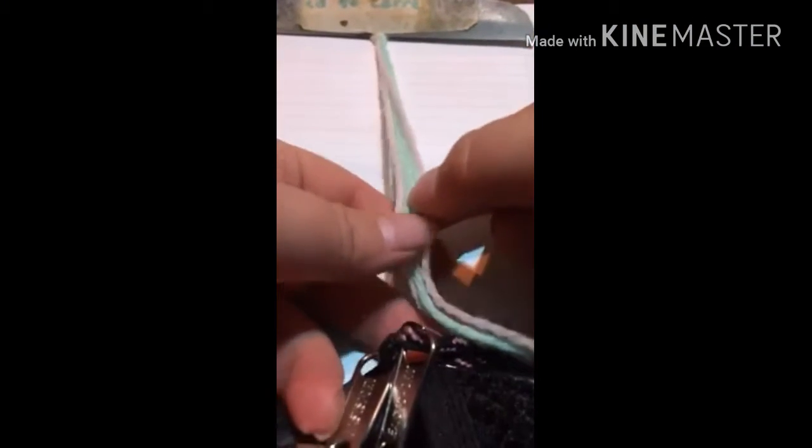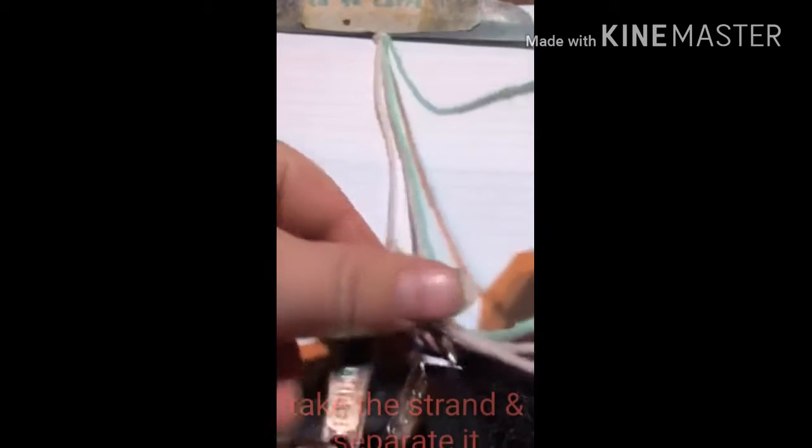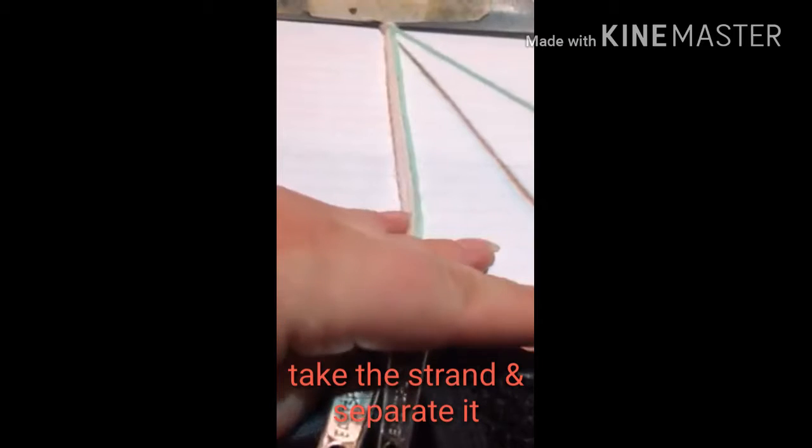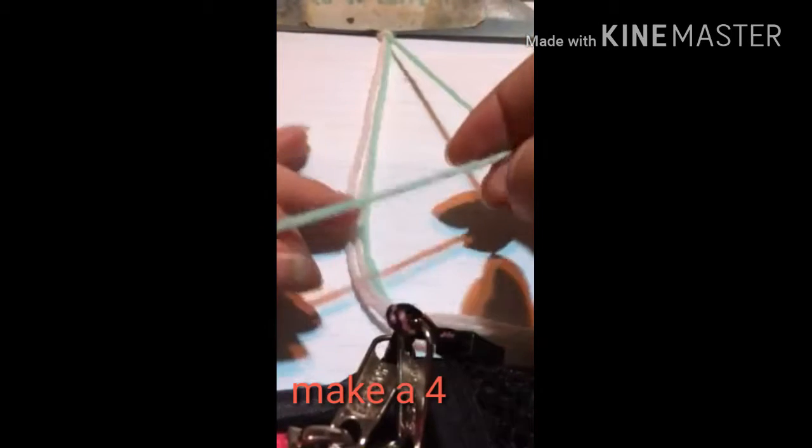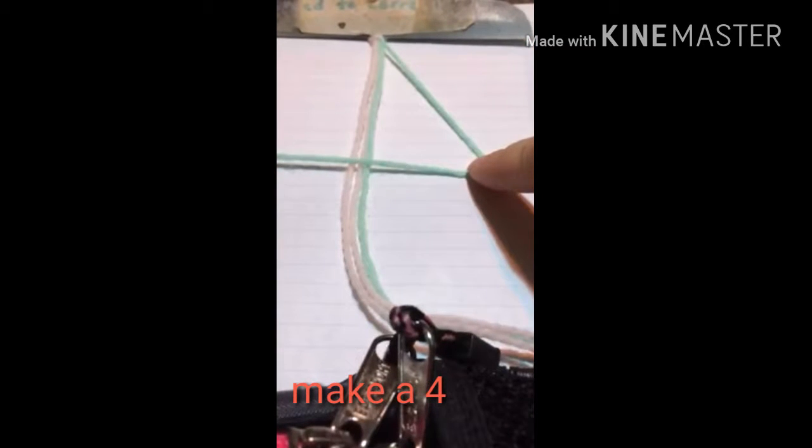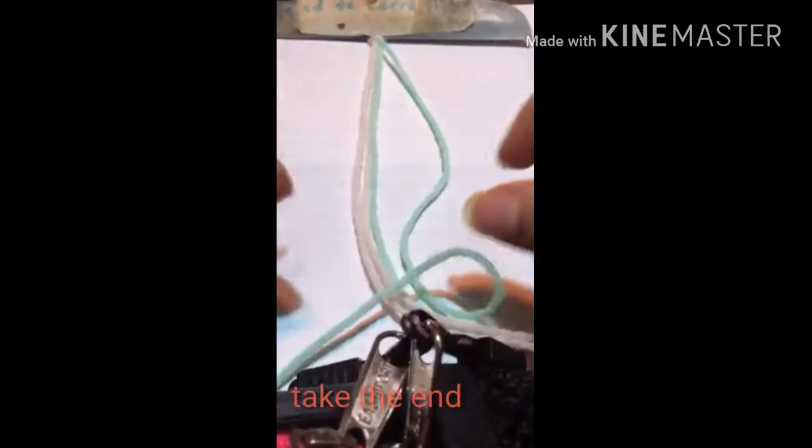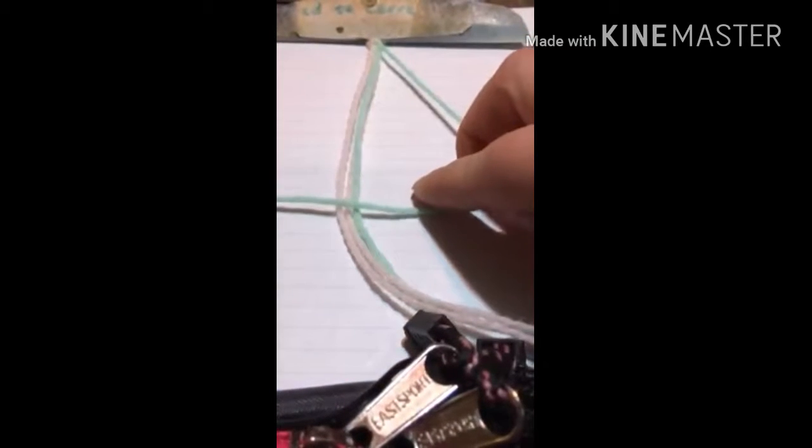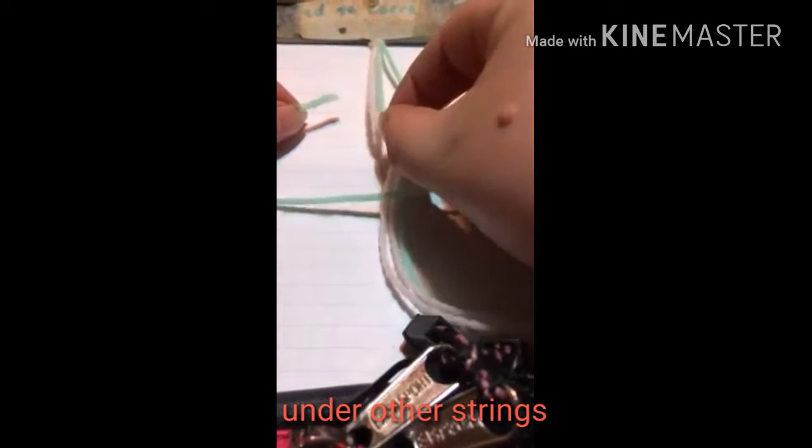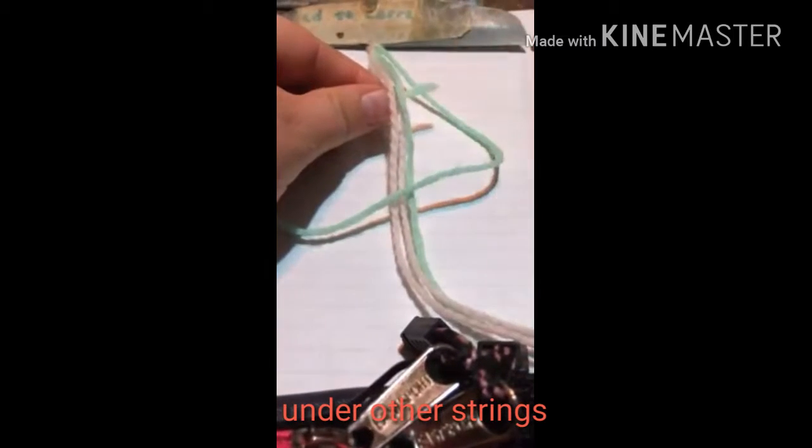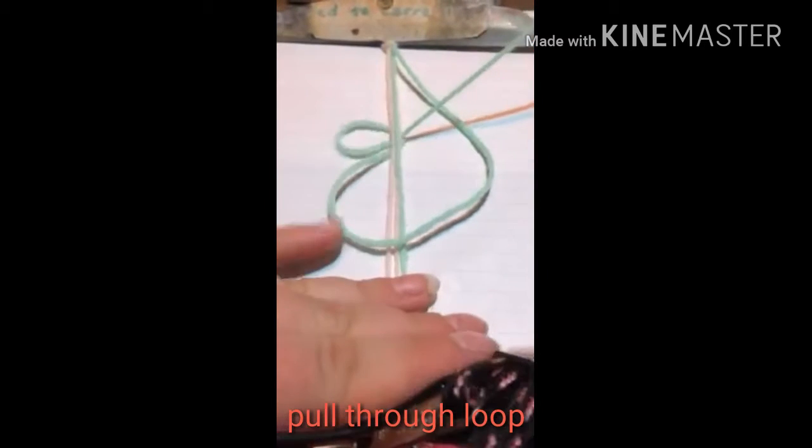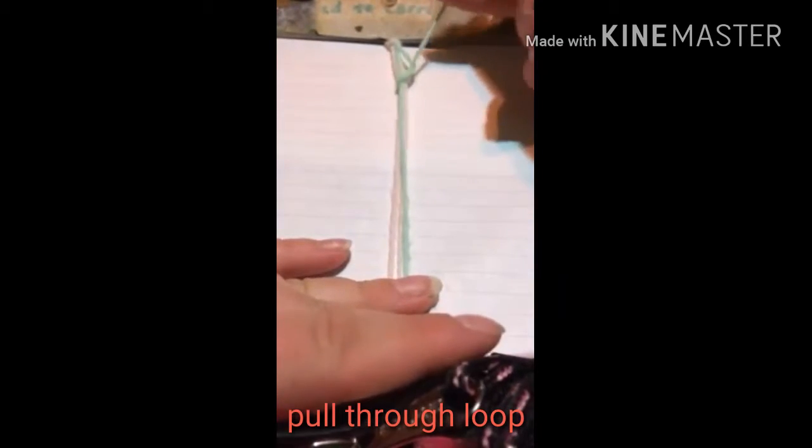Now you can use any color, but for this video I'm going to start with green. You take the first strand, you separate it from the other strand. Then you make, you can either do a backwards four or a forwards four. You make a four and then you take the end, make your four, take the end, lift it under and see how I'm pulling it through the loop. Then you pull all the way to the top.